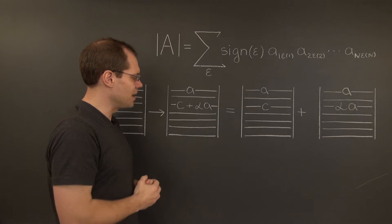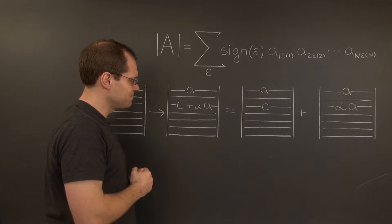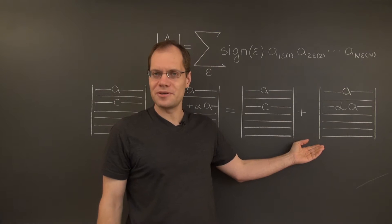And by the linear property, it splits, or distributes, on the third row. In other words, it becomes a sum of two determinants,